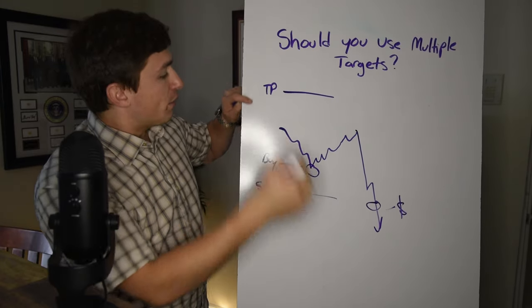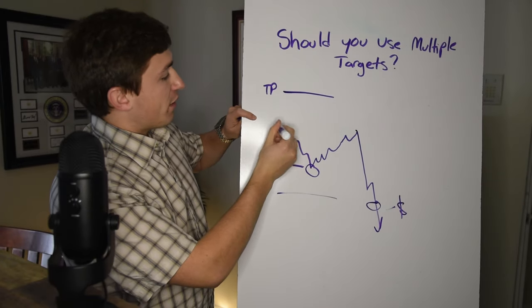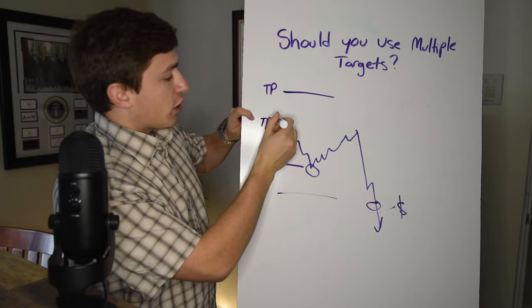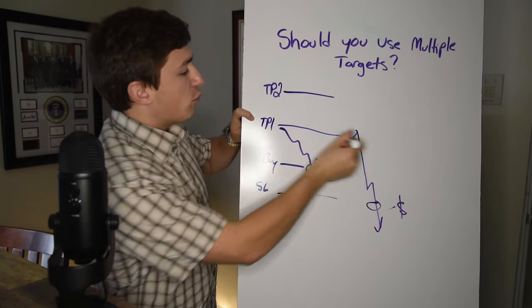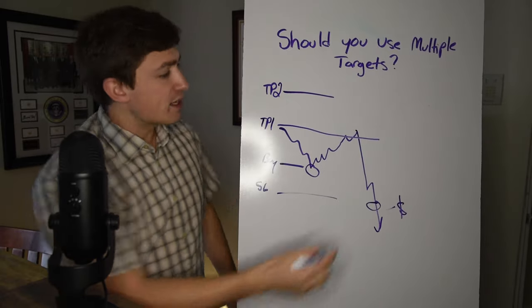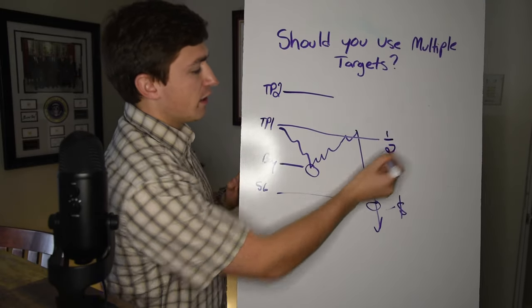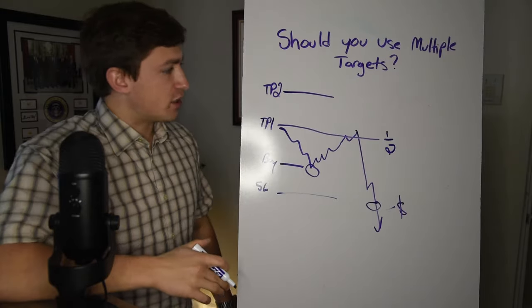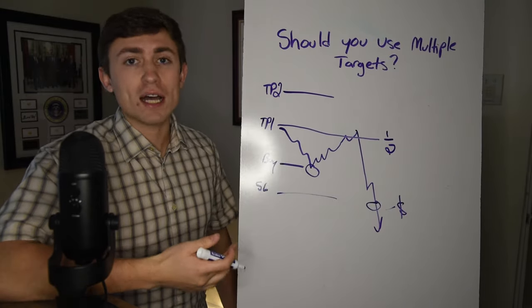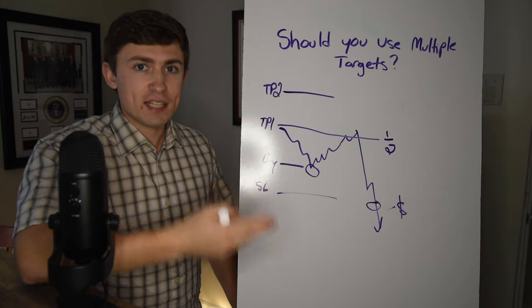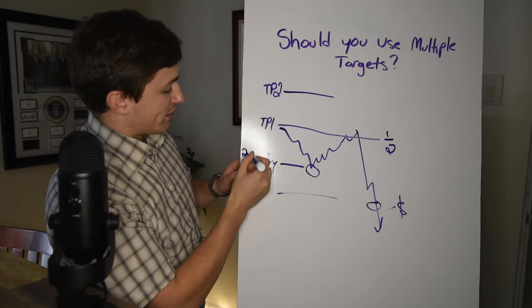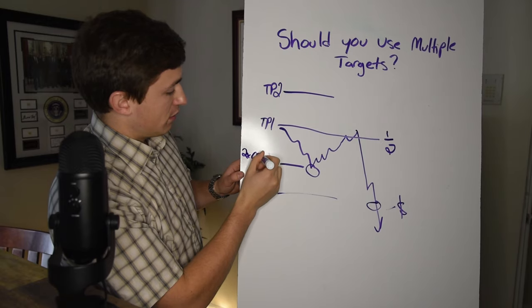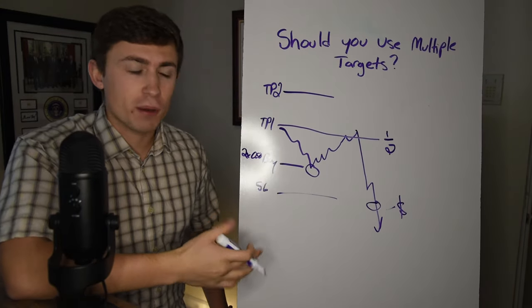And this is really where we get this concept of using multiple take profits. We have take profit here, but what if we also did a take profit here? So we could call this take profit one and we could call this take profit two. And what this would do is let's say that it takes half the trade off the table. Okay. So if you had, let's say that you had one standard lot, this would take, you know, like you might take two trades of 0.50 a piece.